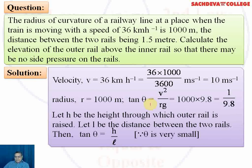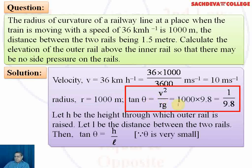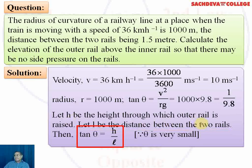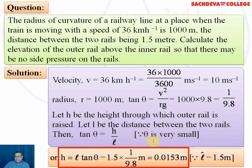Using tan θ = v² / rg, we compute tan θ = 1 / 9.8. If h is the height through which the outer rail is raised and l is the distance between the two rails, then for small θ: tan θ ≈ h / l. Therefore h = l × tan θ. Substituting l = 1.5 meters and tan θ = 1/9.8, we get h = 0.0153 meters.